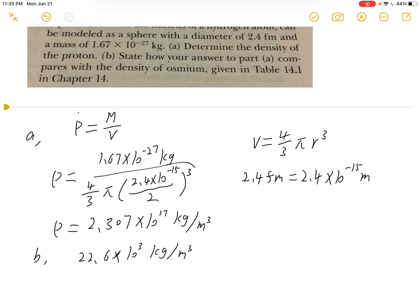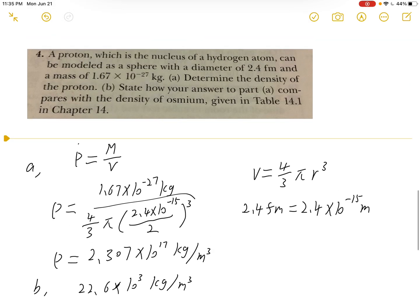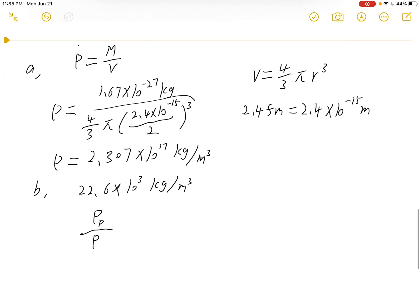You also could take a ratio of the density of the proton over the density of the osmium. So if you take a ratio, you will find how much this proton is greater than osmium.